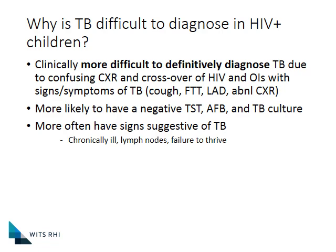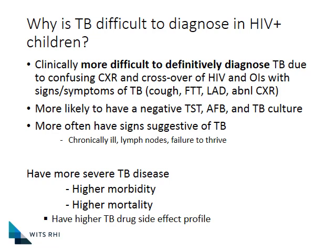Often children have general symptomatic signs of their illness that are also suggestive of TB — they might be chronically ill, have lymphadenopathy, failure to thrive, or be anemic. If they do get TB disease, it tends to be more severe with much higher morbidity and mortality. They also tend to have more drug side effects, both on the TB drugs and the ARVs.